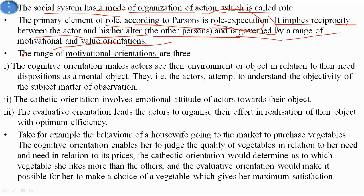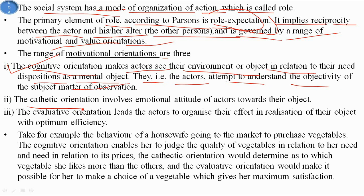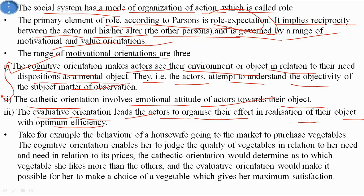Motivational orientation has three major types. First, cognitive orientation, which makes actors see their environment or objects in relation to their need-dispositions — actors attempt to understand the objectivity of the subject matter. Second, cathectic orientation, which involves the emotional attitude of actors toward their objects. Third, evaluative orientation, which leads actors to organize their efforts in realization of their goals with optimum efficiency.